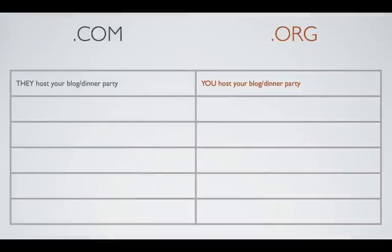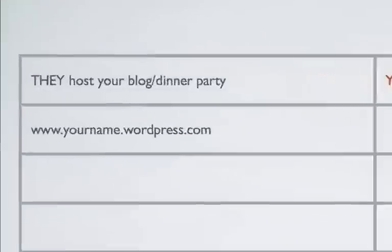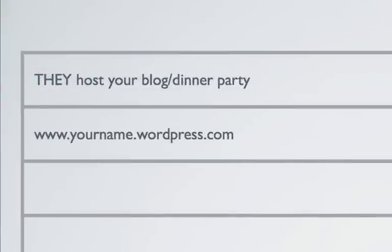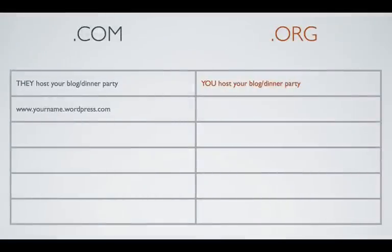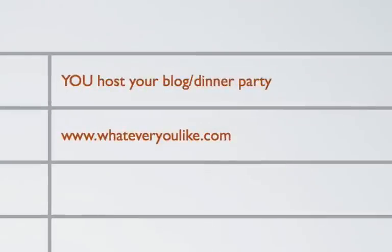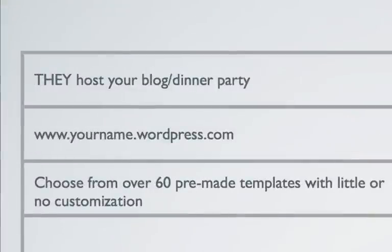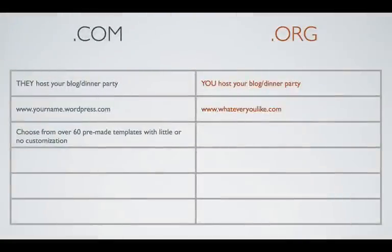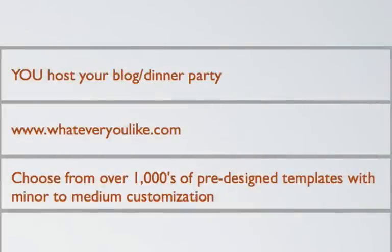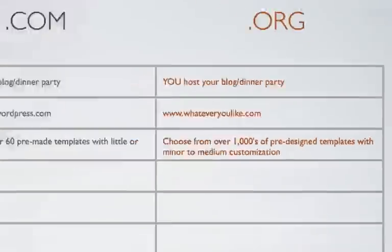.com: they host your blog or dinner party. .org: you host your blog or dinner party. .com: the URL would be yourname.wordpress.com. At .org, your URL would be whateveryoulike.com. .com: you choose from over 60 pre-made templates with little or no customization. At .org, you choose from thousands of pre-designed templates with minor to medium customization.